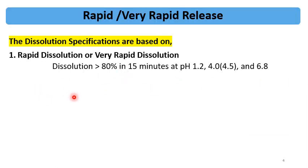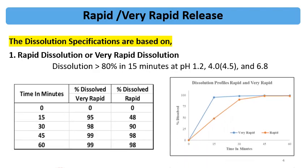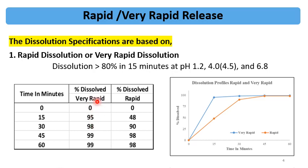There is a dissolution criteria for IR formulation, which involves rapid or very rapid dissolution. Very rapid dissolution means the drug is released above 80% within 15 minutes — this applies to capsule or tablet formulations. Rapid dissolution means the drug is released above 80% in 30 minutes. Dissolution above 80% within 15 minutes at pH 1.2, pH 4.5, and 6.8 is considered very rapid. If it is within 30 minutes, then it is called a rapid dissolution profile.